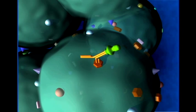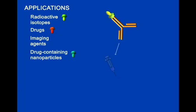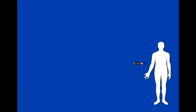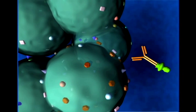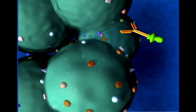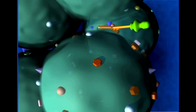In addition to monoclonal antibodies acting on their own, we can also attach something specific to it like a drug, which can hitch a ride into the cancer cell. So rather than administering a drug that goes everywhere in the body, it will go only directly into the cancer cell.